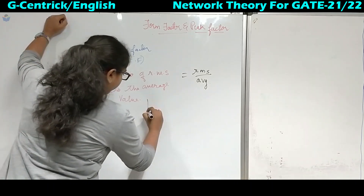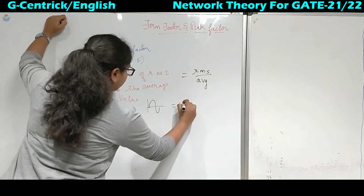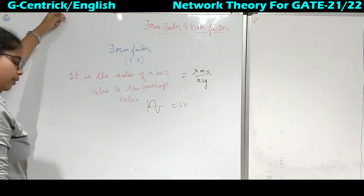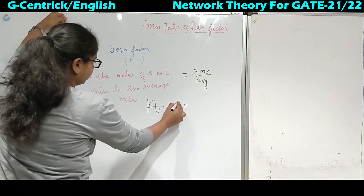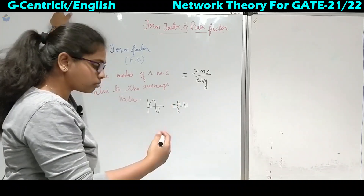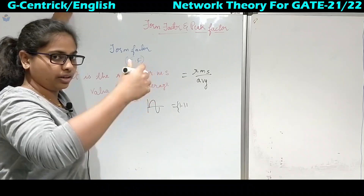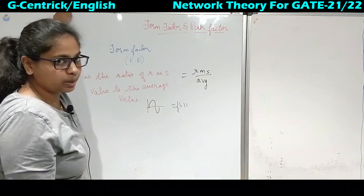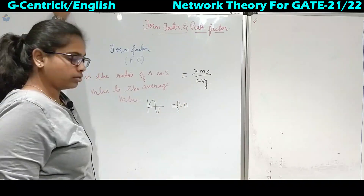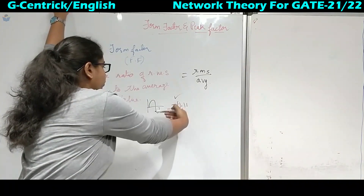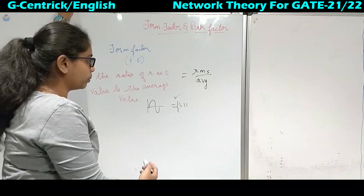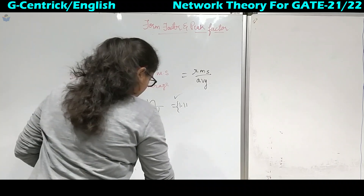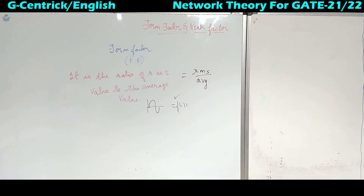For the sinusoidal wave, the form factor is equal to 1.11. The sign gets cancelled, so it will not have any sign. This 1.11 is why the voltages generated at power stations — whether 11 kV, 33 kV, or 66 kV — are all approximately multiples of 11. That is the reason we take it as the fixed value for transmission of AC power.